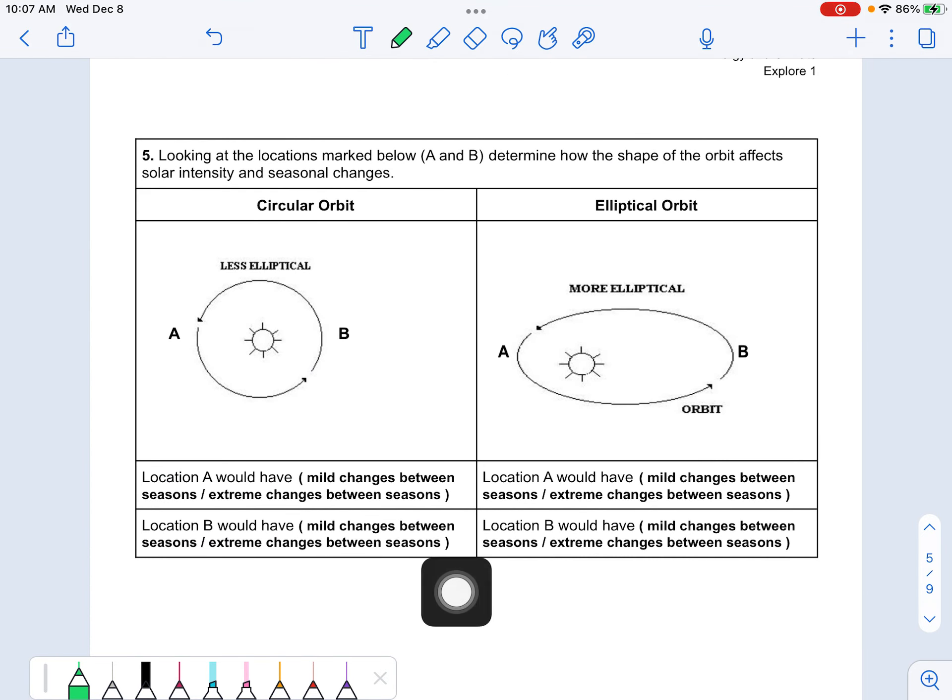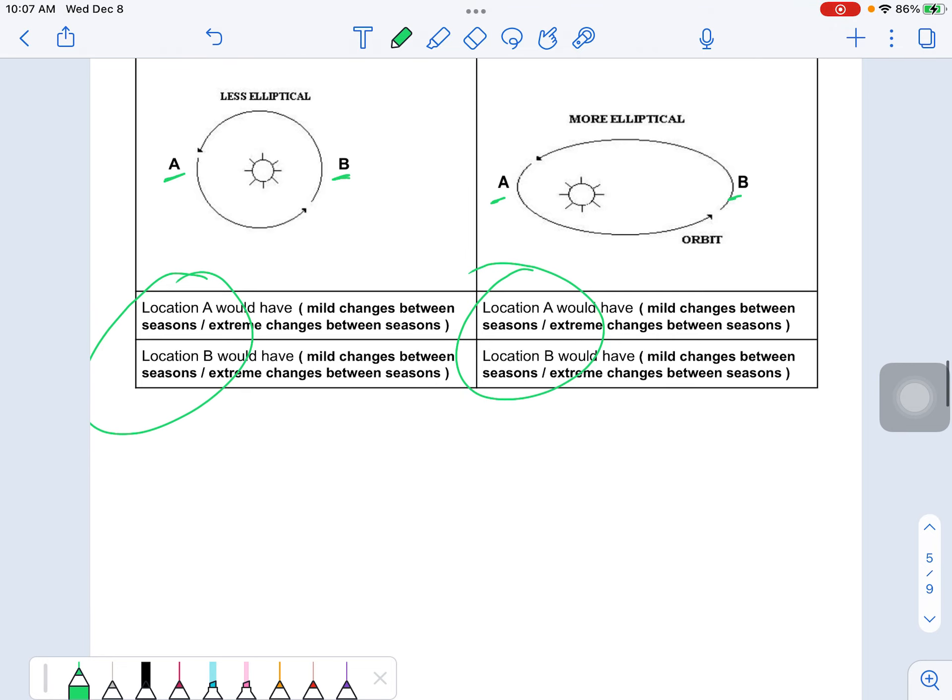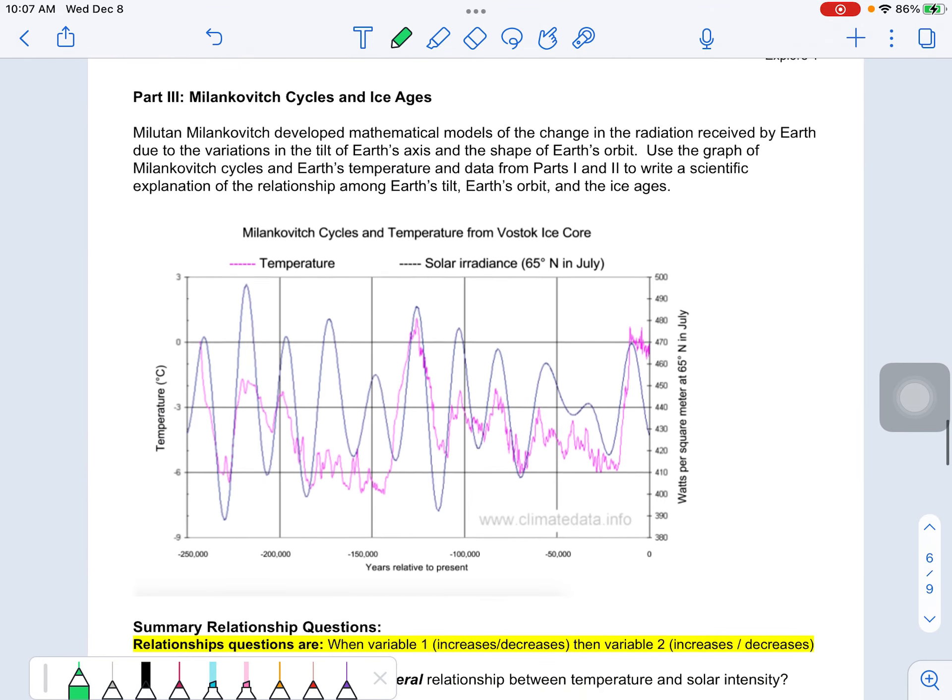Here you're looking at a diagram similar to what we saw up top. Noticing here, locations A and B. That's what we're thinking about when we're answering these questions down here. So you're just circling up which one makes the most sense, mild or extreme. And then the third part, you're looking at some graphs.